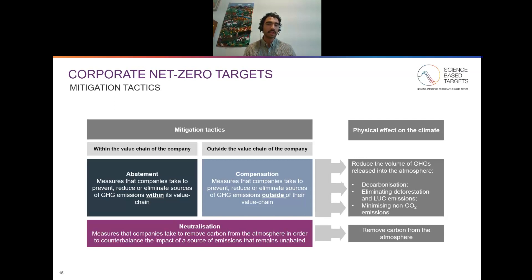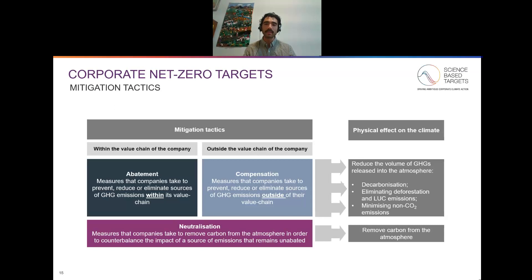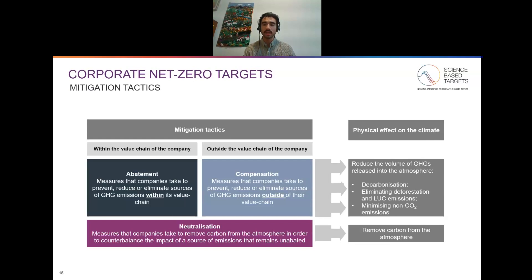These are the actions that companies take to achieve their existing science-based targets, resulting in value chain emissions reductions. Neutralization are actions that companies take to remove carbon from the atmosphere in order to counterbalance the impact of any unabated source of emissions, and can occur inside or outside the value chain of the company. Compensation are actions that companies take to prevent, reduce, or eliminate sources of emissions outside of their value chain. These are often associated with traditional carbon credits or offsets. You can see how each of these actions is tied to different physical effects on the climate, and neutralization results in carbon removal from the atmosphere.